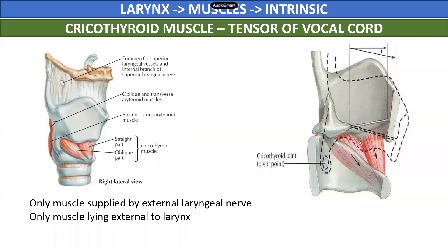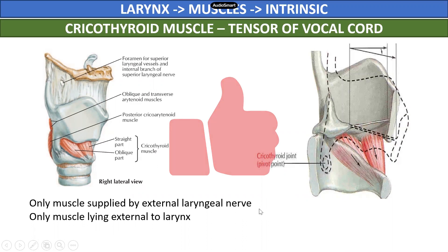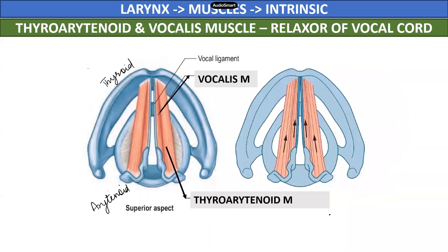The cricothyroid muscle is a tensor of the vocal cord. It is the only muscle supplied by the external laryngeal nerve and is the only laryngeal muscle lying external to the larynx. The next muscle is the relaxer of the vocal cord.